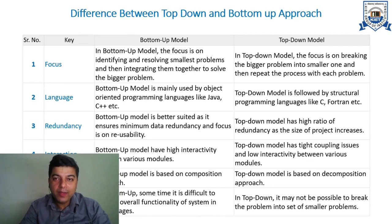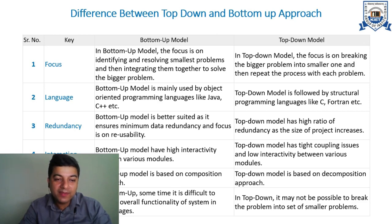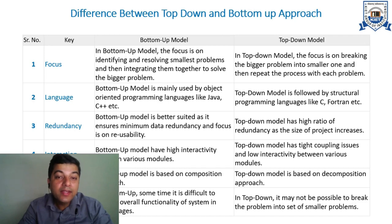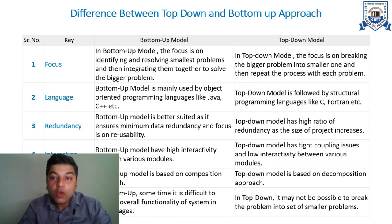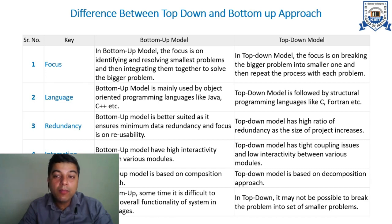Now we take on the differences between top-down and bottom-up approach. Both are very popular but have some basic differences. The bottom-up approach basically starts with identifying and resolving the smallest problems and keeps on integrating them together to solve the bigger problem — starting from scratch in terms of problems and integrating solutions to smaller problems until they reach a level where they provide a solution to the total and complete set of requirements. The top-down model basically focuses on breaking the bigger problem into smaller ones, starting from the complete set of requirements and creating modules and sub-modules until a level is attained where all requirements are addressed.